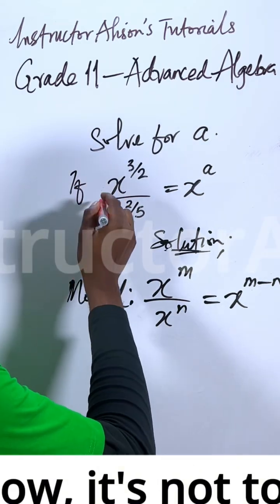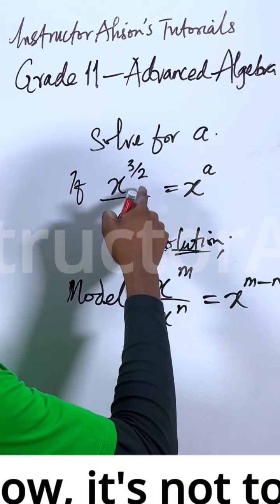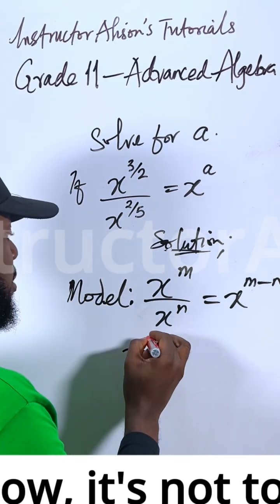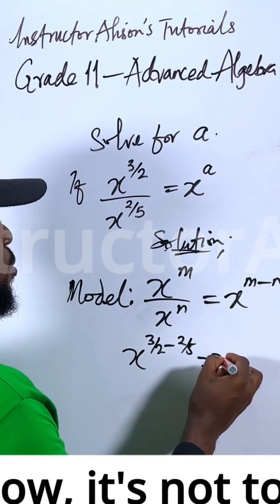Let's apply that here. We have the bases to be the same, so we just take the common base and subtract the powers. You'll be having 3 over 2 minus 2 over 5 equals x to the power of a.